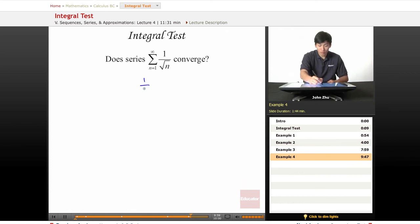So 1 over n to the 1 half, we see that the p-value equals 1 half, which is less than 1. So it should diverge.